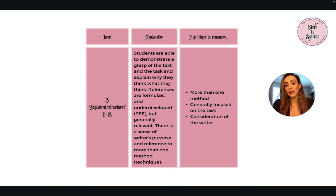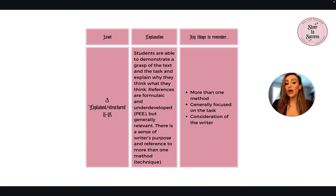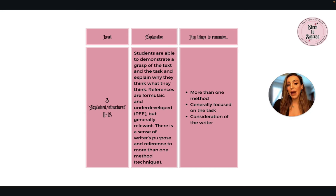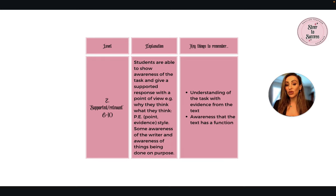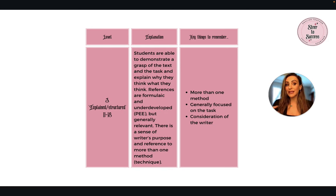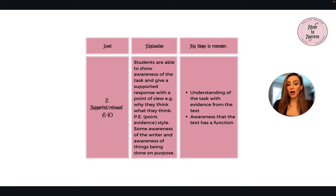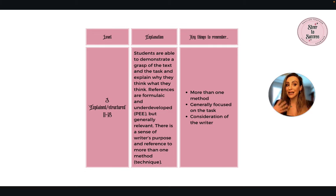At this level, students are able to demonstrate a grasp of the text and the task and explain why they think what they think — so you're giving justifications. References are formulaic and underdeveloped, like a PE style, referring to the text and responding to the task but generally relevant. There is a sense of the writer's purpose, and that's why it's so important — it's mentioned even from relatively low down the mark scheme. There is also reference to more than one method or technique.